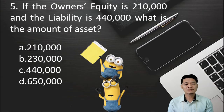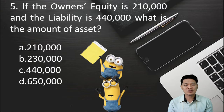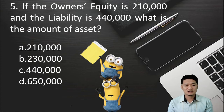For number 5: If the owner's equity is 210,000 pesos and the liability is 440,000 pesos, what is the amount of asset? Is it letter A, 210,000 pesos? Letter B, 230,000 pesos? Letter C, 440,000 pesos? Or letter D, 650,000 pesos?